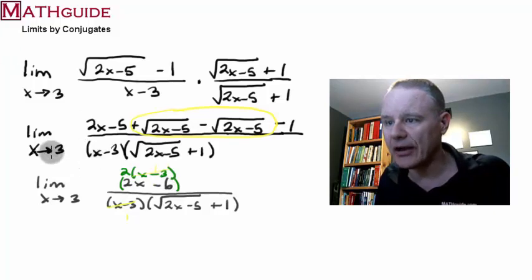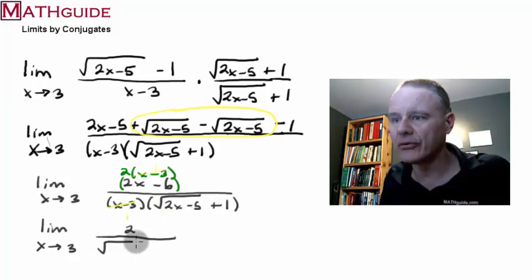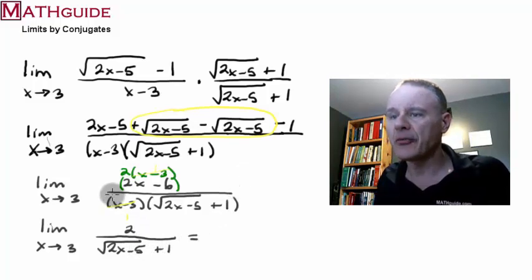So the limit as x approaches 3. Now our numerator is 2 times 1, which is just a 2. And now all I have is this part over here, which is that square root 2x minus 5 plus 1. Life is good.